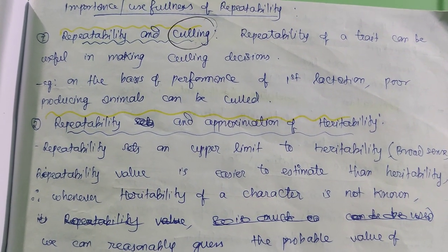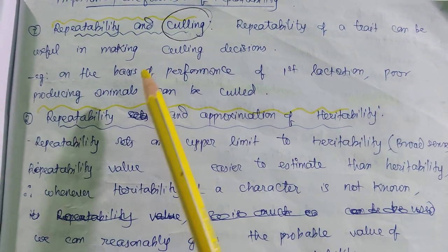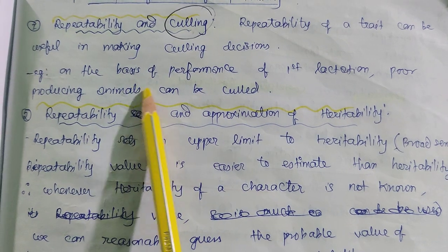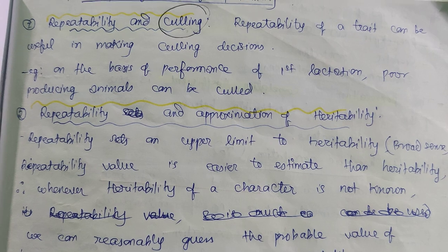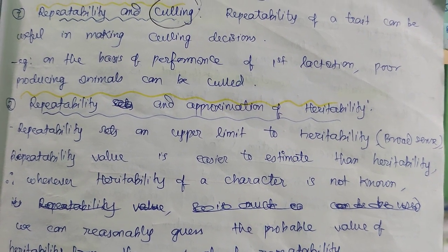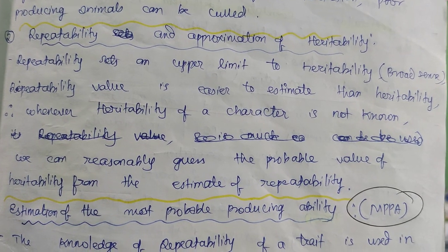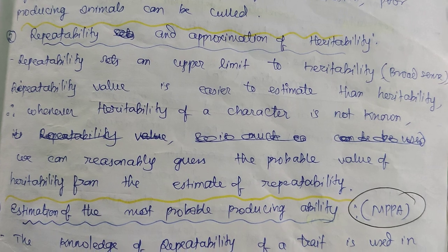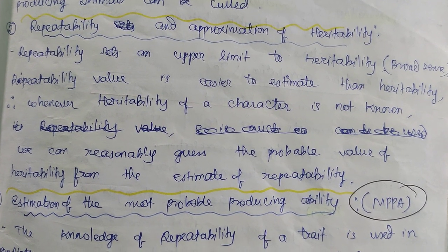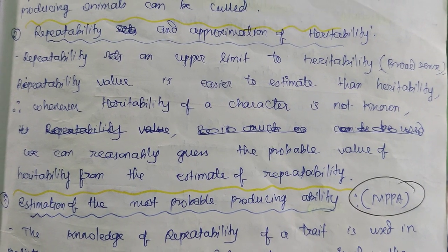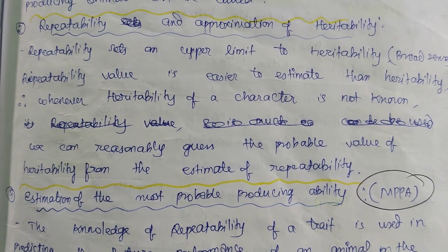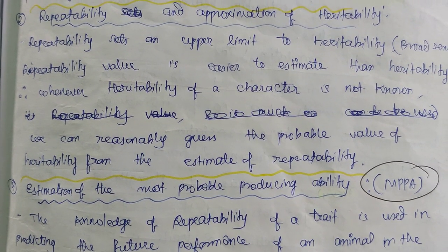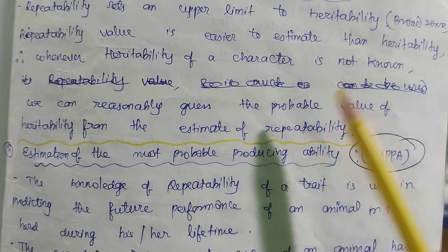Repeatability of a trait can be useful in making culling decisions. For example, on the basis of first lactation performance, poor-producing animals can be culled for economic purposes. The second usefulness is repeatability as an approximation of heritability. Since repeatability sets an upper limit to heritability, and heritability values are often difficult to estimate, repeatability values are easier to obtain. So whenever heritability of a character is not known, we can guess the probable value of heritability from the estimate of repeatability.